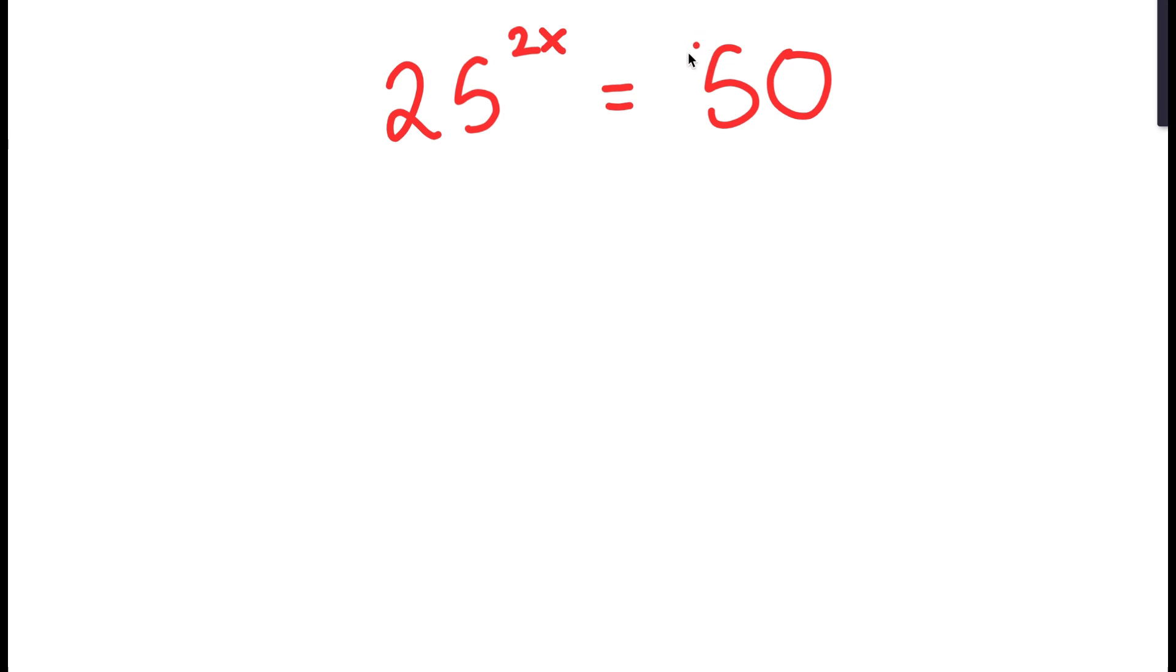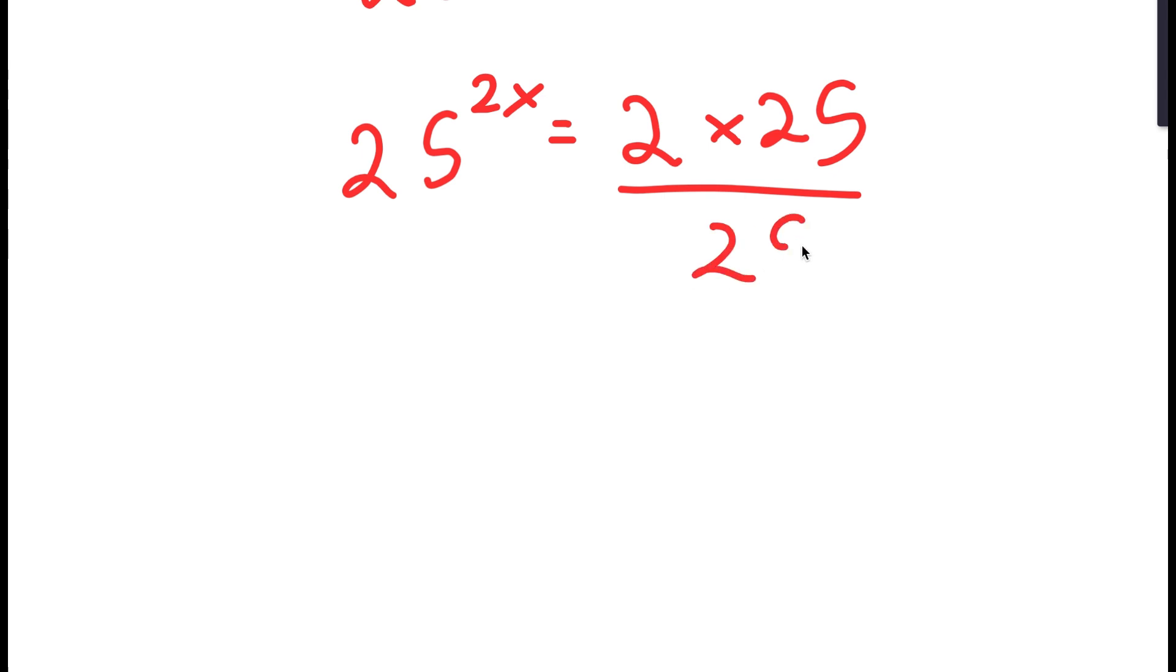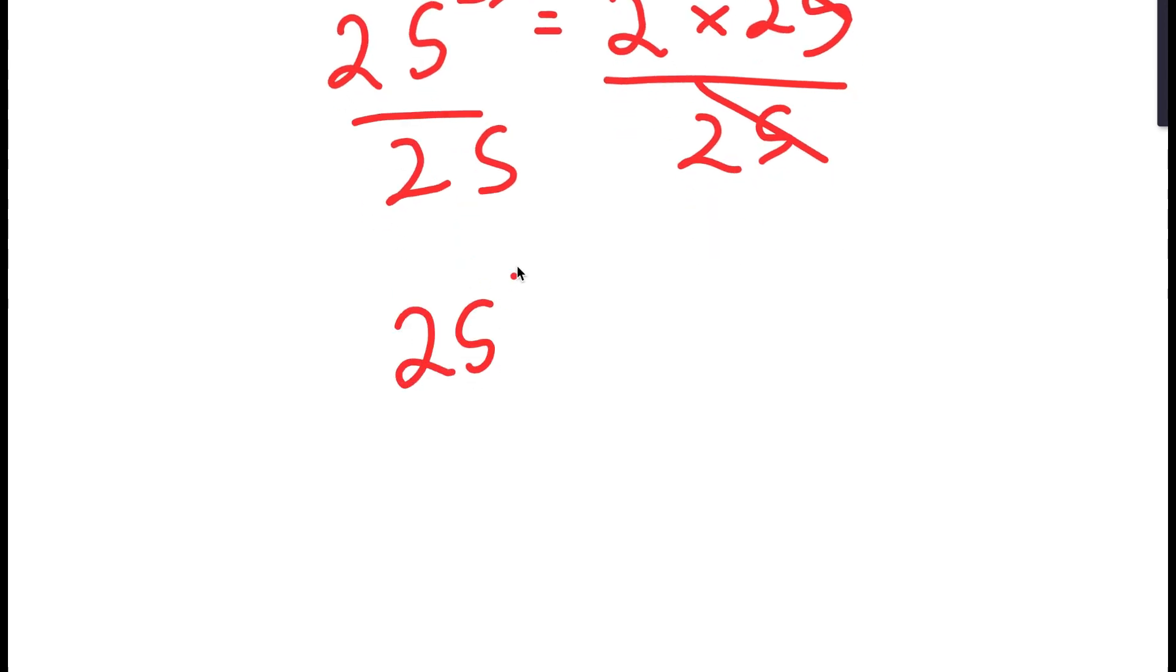To solve this, I'm going to first rewrite 50 as 2 times 25. And then, after that, I'm going to divide both sides by 25. So this way, because these two have bases of 25, I can simplify this.